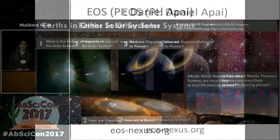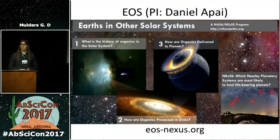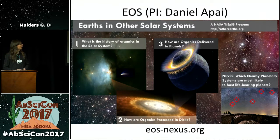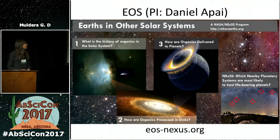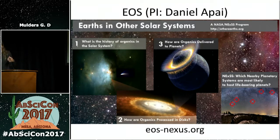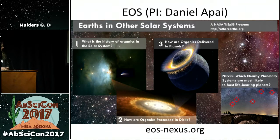I'm not doing this work in isolation. I'm working as part of the EOS team — the Earths and Other Solar Systems team — led by Daniel Apai, who is the PI of this project. It's a project funded by NASA Nexus. The overarching goal is to follow the evolution of organics from the molecular cloud scale, through the protoplanetary disk scale, and eventually into exoplanets. I'm working specifically on how organics, and in particular water, are delivered to planetary systems.